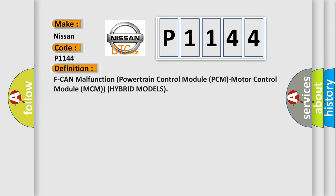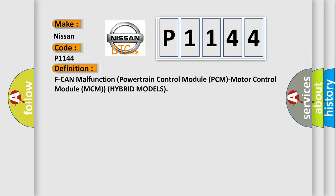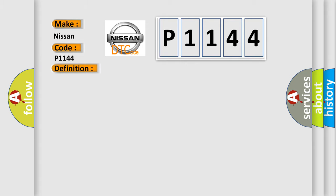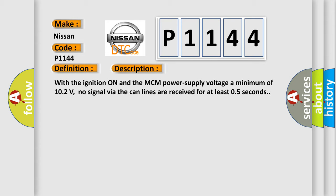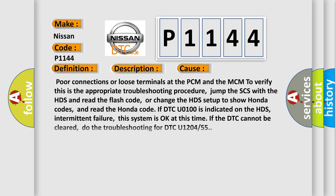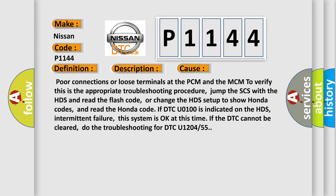The basic definition is: F-CAN malfunction — powertrain control module (PCM) / motor control module (MCM) for hybrid models. With the ignition on and the MCM power supply voltage at a minimum of 10.2 volts, no signal via the CAN lines is received for at least 0.5 seconds. This error occurs most often due to poor connections or loose terminals at the PCM and MCM. To troubleshoot: jump the SCS with the HDS and read the flash code, or change the HDS setup to show Honda codes and read the Honda code. If DTC U0100 is indicated on the HDS and there is an intermittent failure, the system is okay at this time. If the DTC cannot be cleared, do the troubleshooting for DTC U1204 or 55.